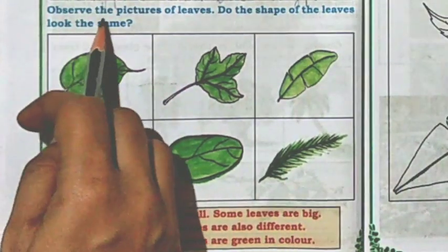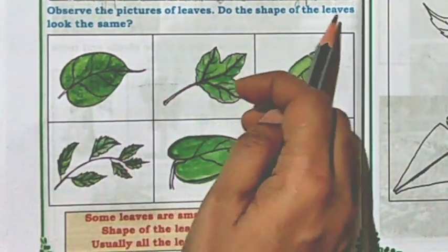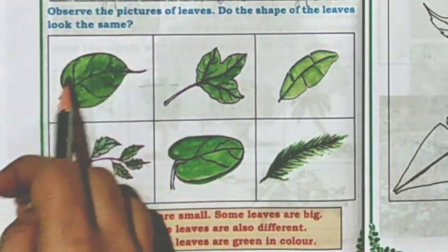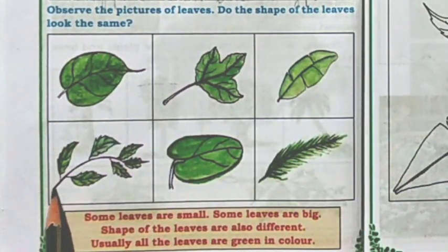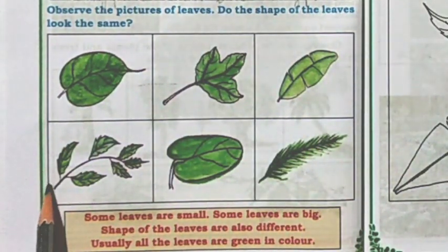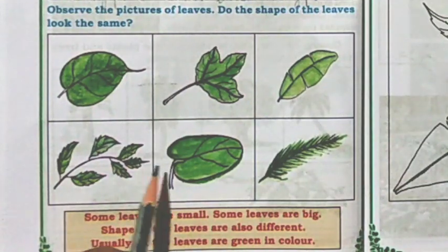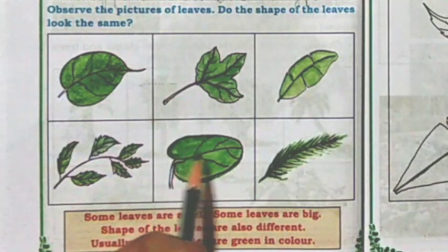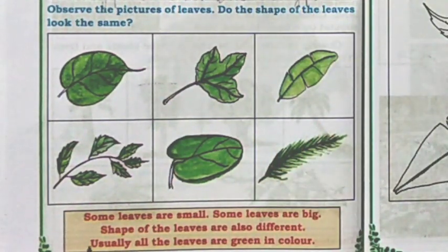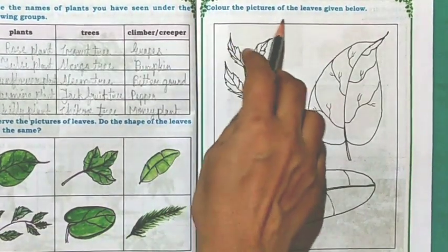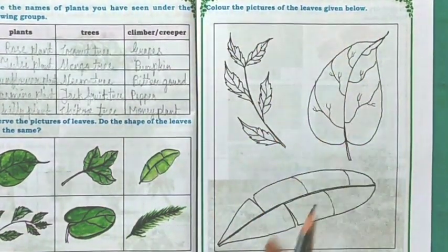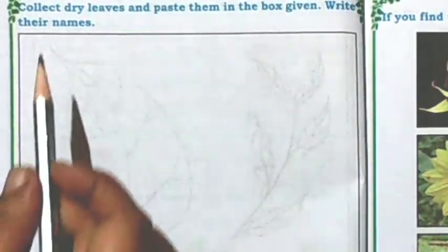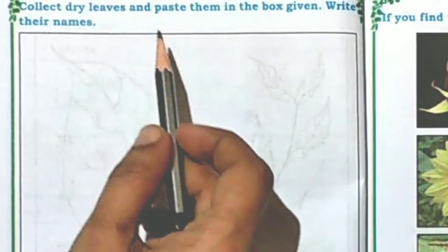Observe the pictures of leaves. Do the shapes of the leaves look the same? No. Some leaves are small, some leaves are big. The shape of the leaves are also different. Usually all the leaves are green in color. Color the pictures of the leaves given below and write their names.